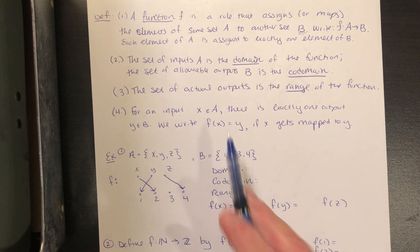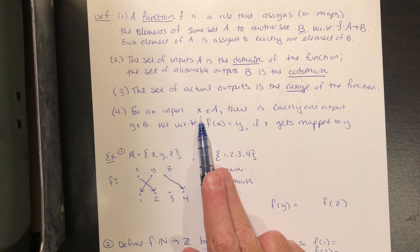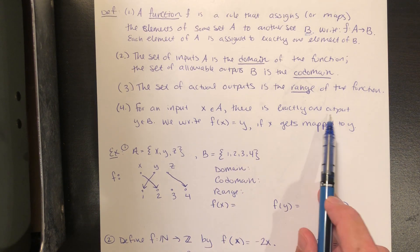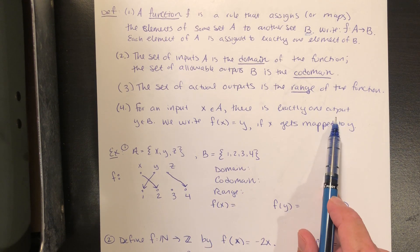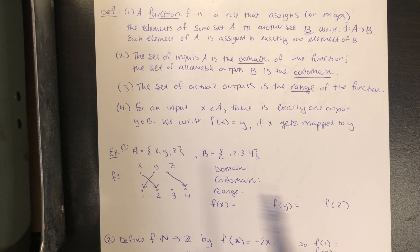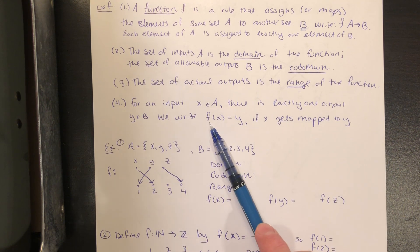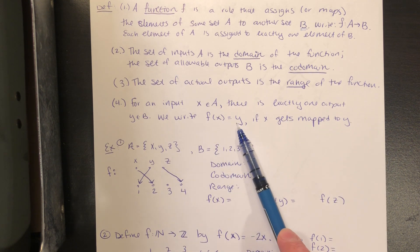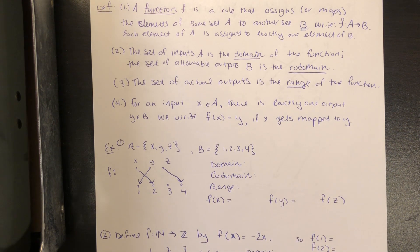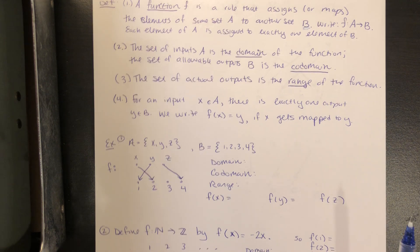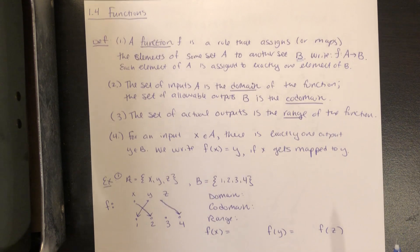For an input X, there has to be exactly one output, as we said. So if that output is Y, then we would write F of X is equal to Y, if X gets mapped to Y. Let's go through some examples to make sure we understand all these definitions.